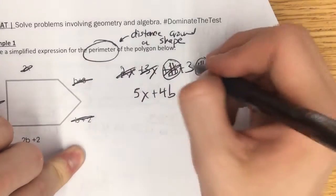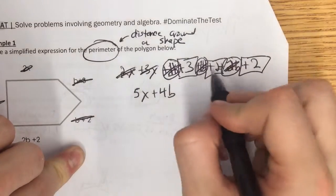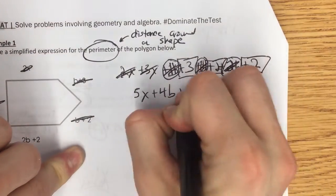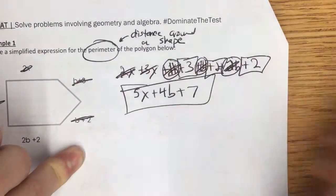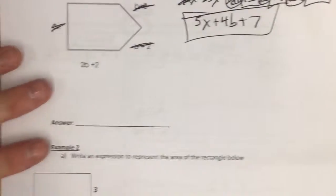Now look at our constants. I see plus 3, plus 2, and plus 2. 3 plus 2 is 5, plus 2 is 7. So after we can combine our terms, I get 5x plus 4b plus 7.